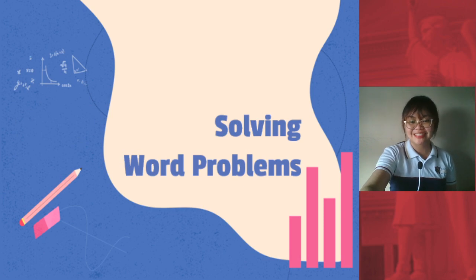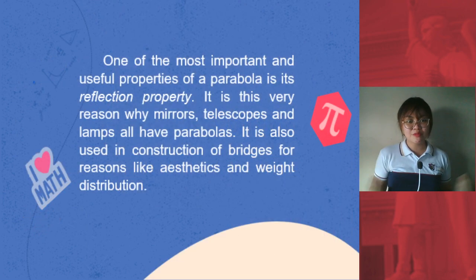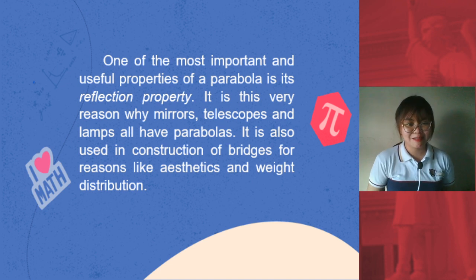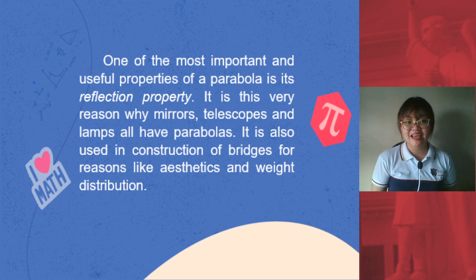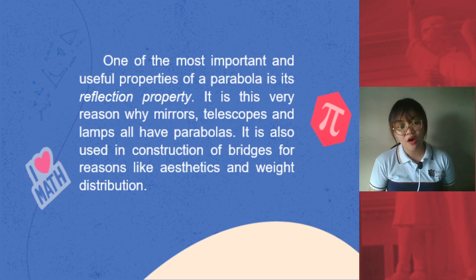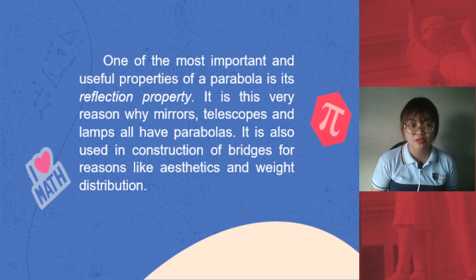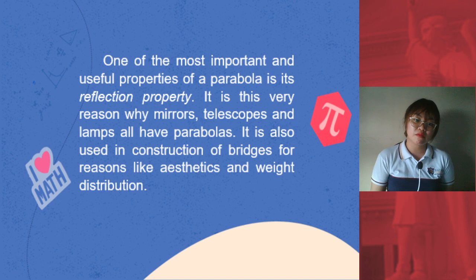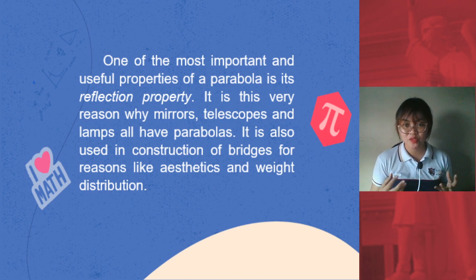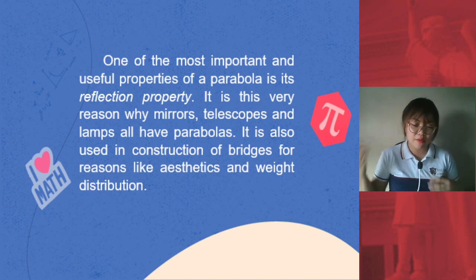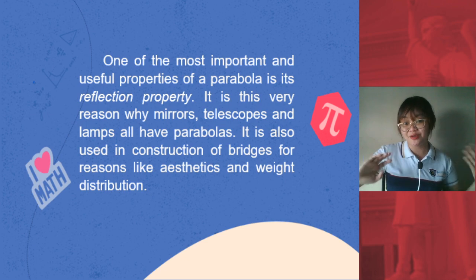One of the most important and useful properties of a parabola is its reflection property. It is the very reason why mirrors, telescopes, and lamps all have parabolas. It is also used in constructing bridges for reasons like aesthetics — to make it beautiful — and for weight distribution. If you want to know more about the reflection property, please do your research.